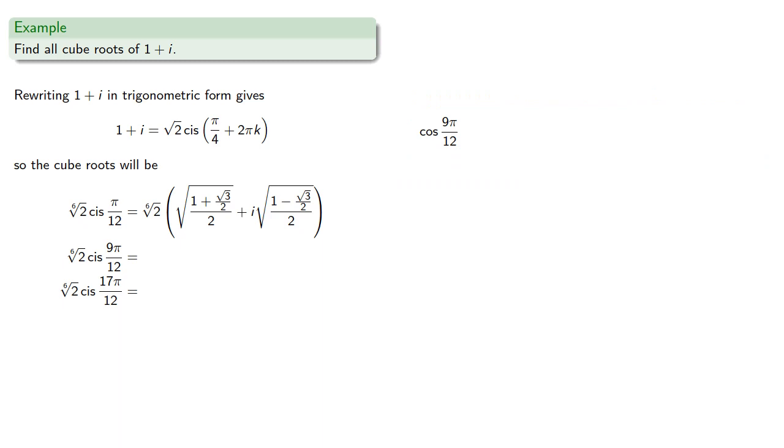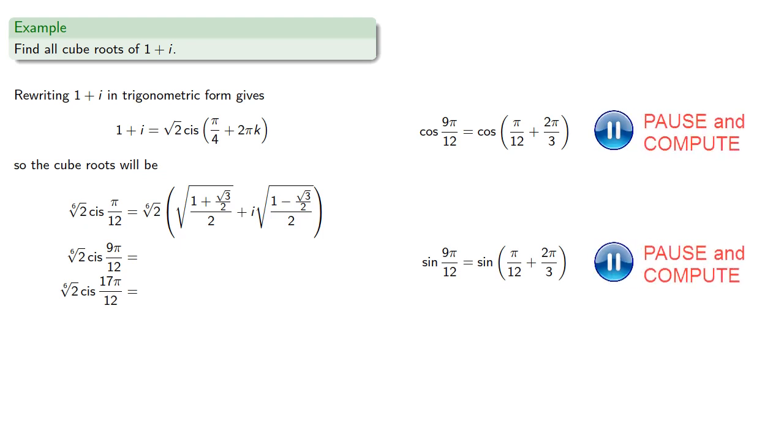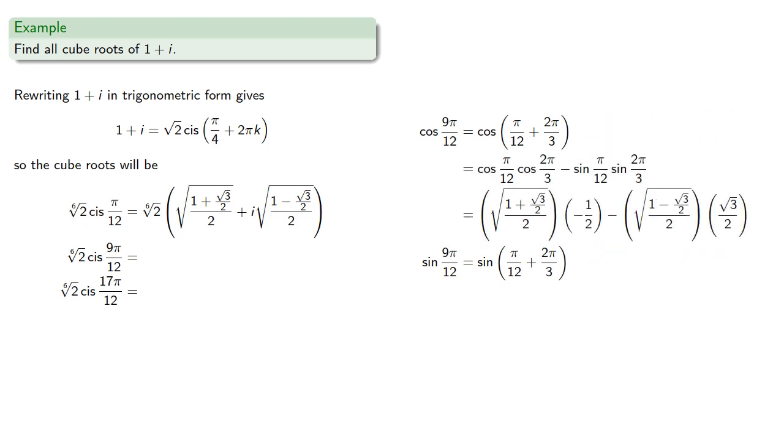So cosine of 9π/12, well that's really the cosine of π/12 + 2π/3, and sine of 9π/12 is sine of π/12 + 2π/3. And we find...